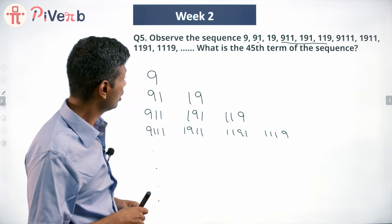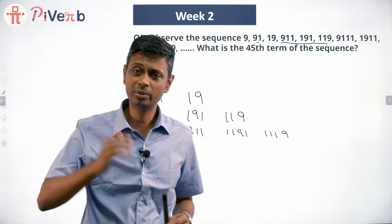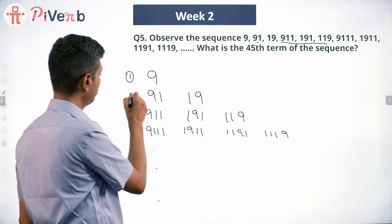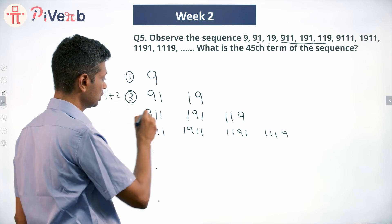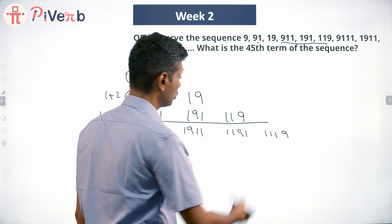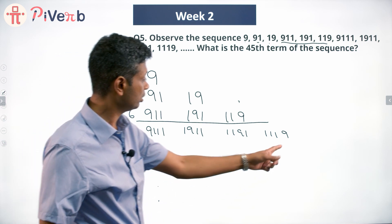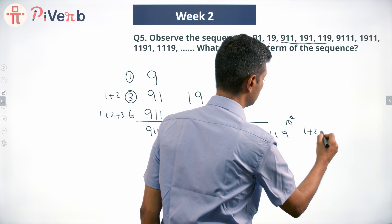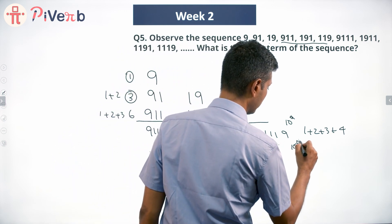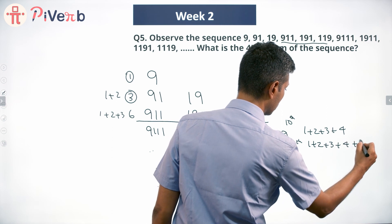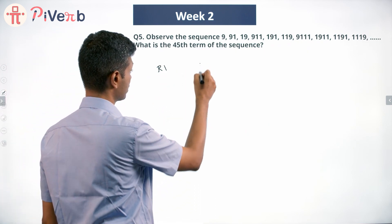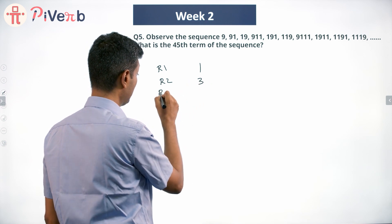Now let's think about finding the 45th term of this sequence. For questions like these, I like counting till the end of each row. The first row has 1 number. Second row: 1 + 2 = 3. Third row: 1 + 2 + 3 = 6 — so the end of the third row accounts for 6 numbers. End of the fourth row: 1 + 2 + 3 + 4 = 10. End of the fifth row: 1 + 2 + 3 + 4 + 5 = 15.